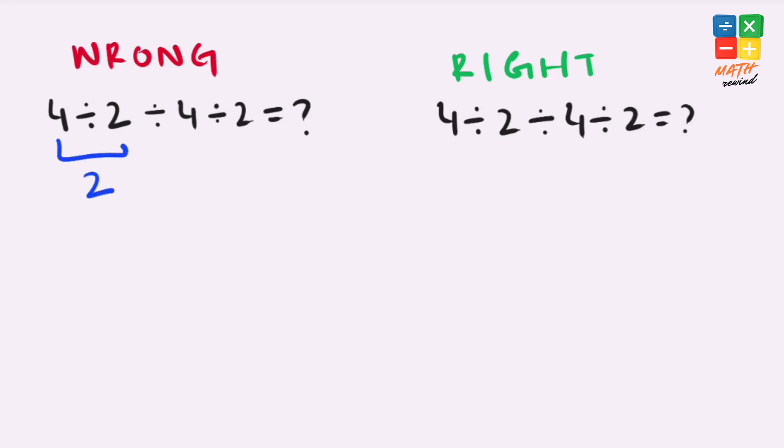4 divided by 2 equals 2. 4 divided by 2 equals 2 and 2 divided by 2 equals 1, but this answer is not right because